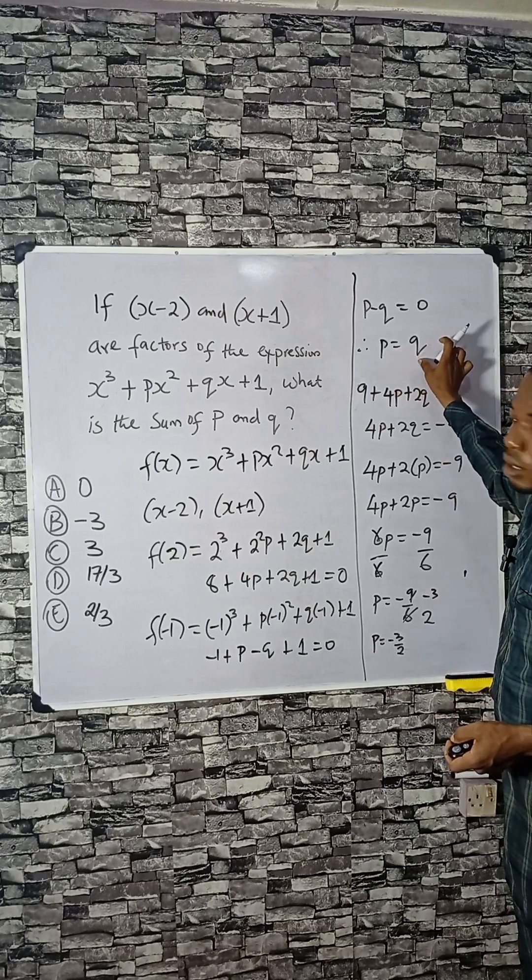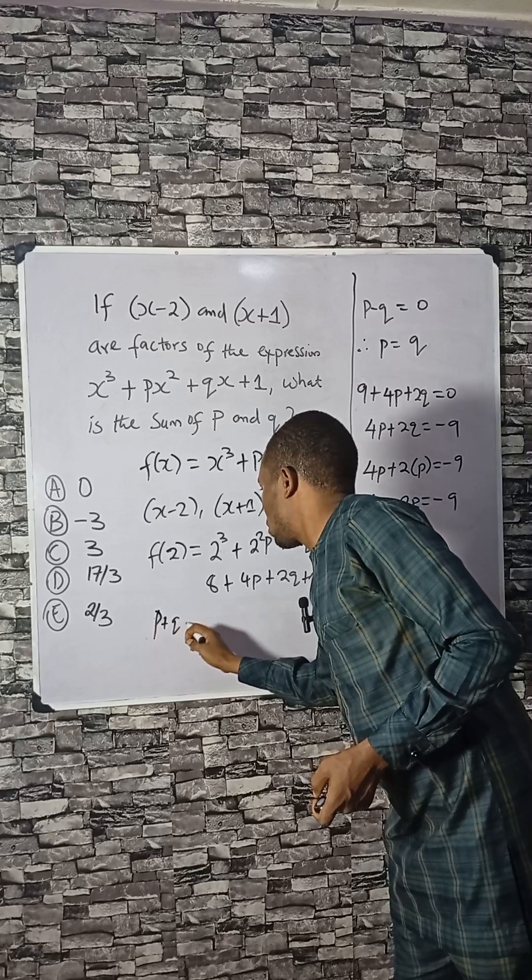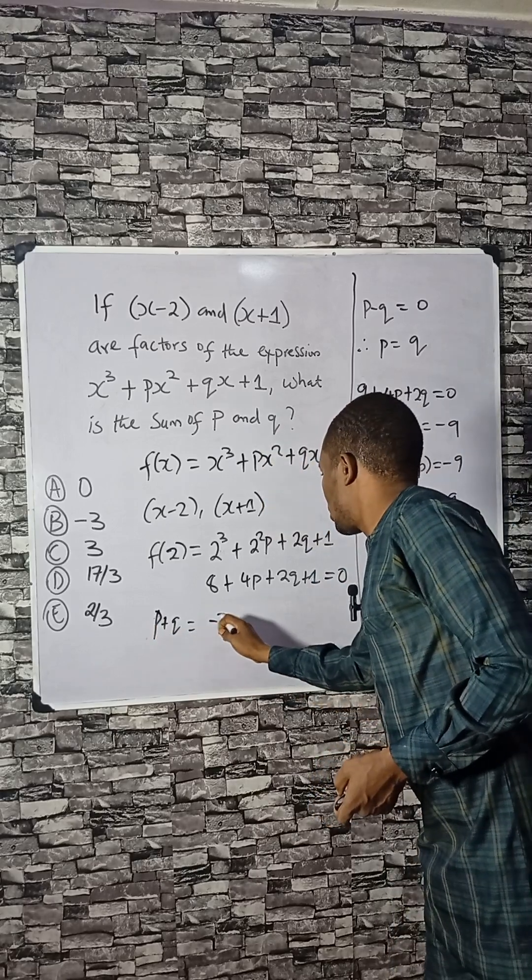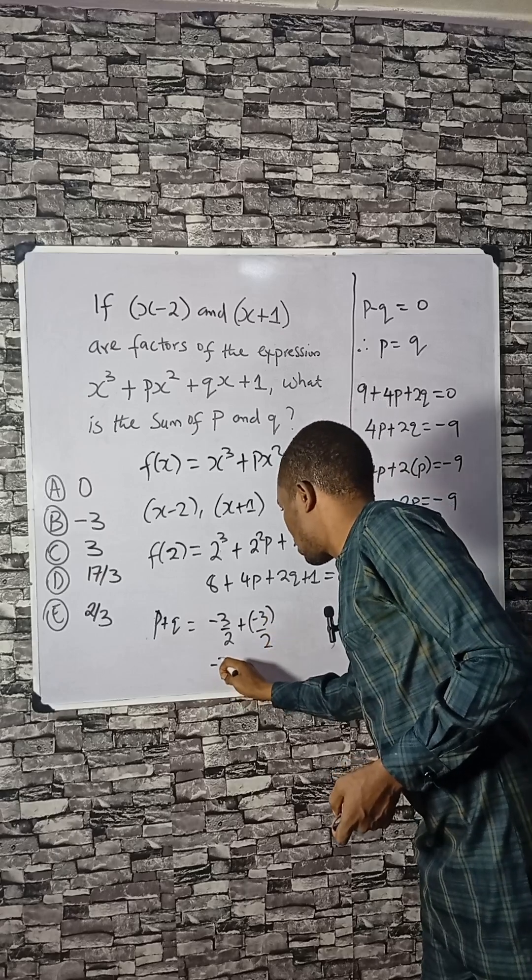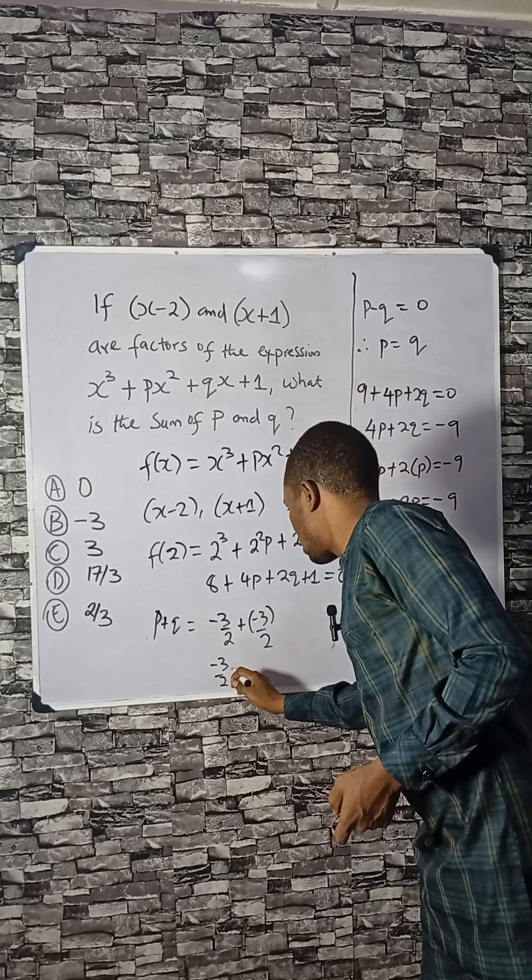But we know that p and q are the same. p plus q equals minus 3 over 2 plus minus 3 over 2, which equals minus 3.